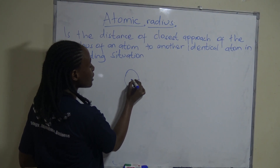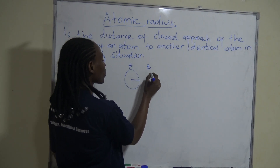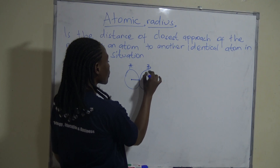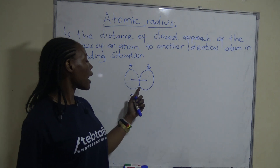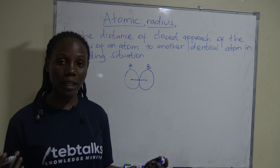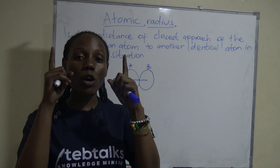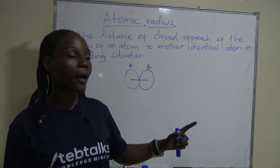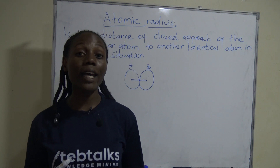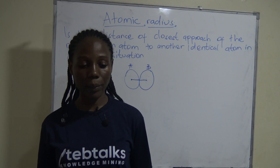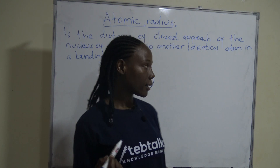The distance of closest approach: if this is atom A and this is atom B, its distance of closest approach would be from here to here. Because we are saying in a bonding situation, the two atoms have to come together. This definition includes the component that the atoms are identical — they have to be of the same element. The other definition: atomic radius is half the internuclear distance.